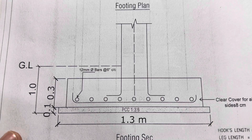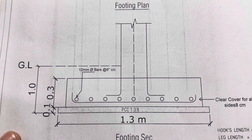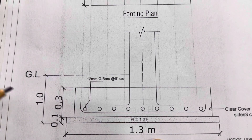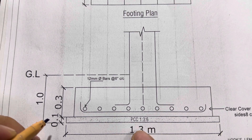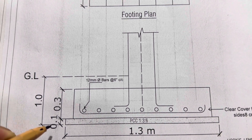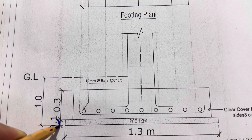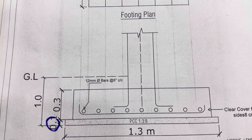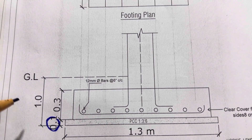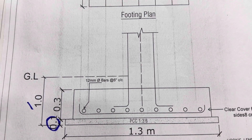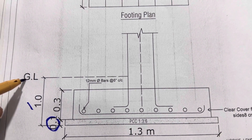This is the footing section, which has a width of 1.3 meter. We did PCC with a ratio of 1:3:6, and the thickness is 10 centimeter or 0.1 meter. The total depth of the footing is 1 meter — this is the minimum depth of the footing to ground level.